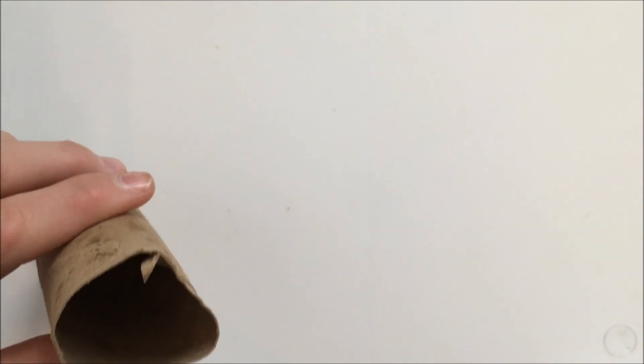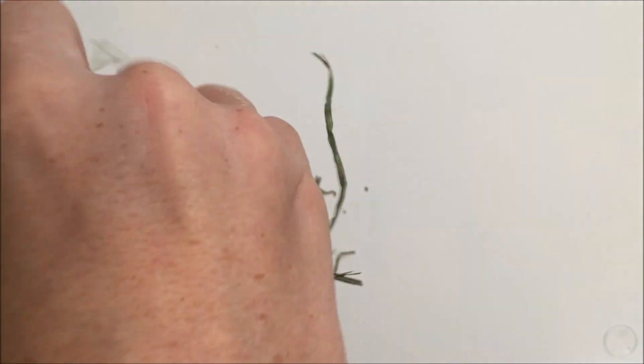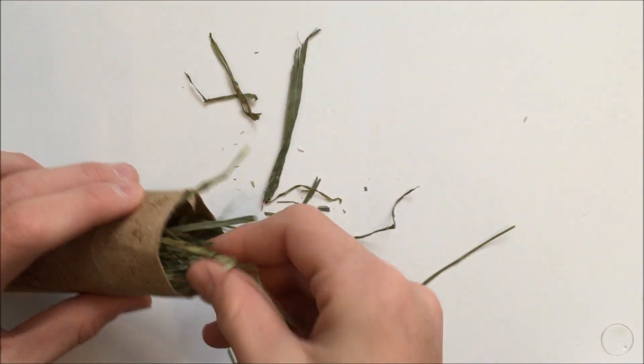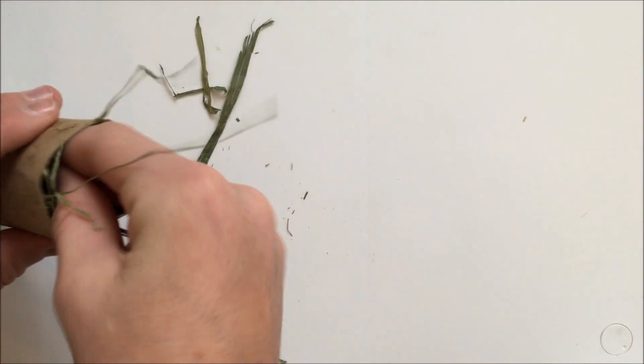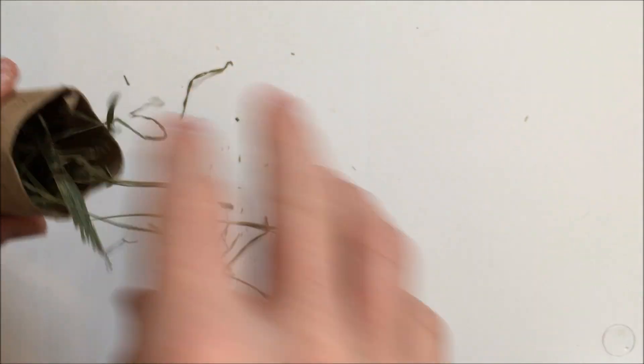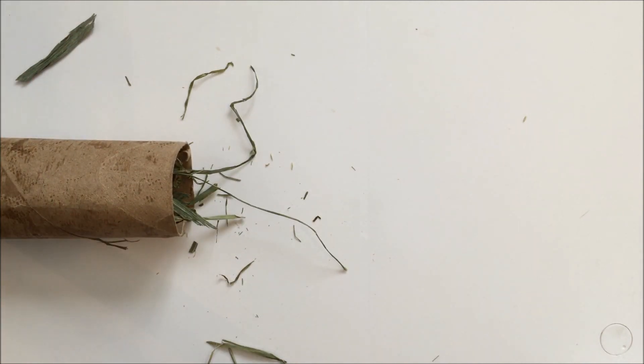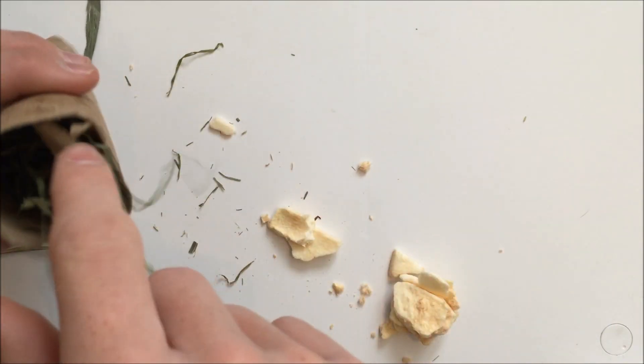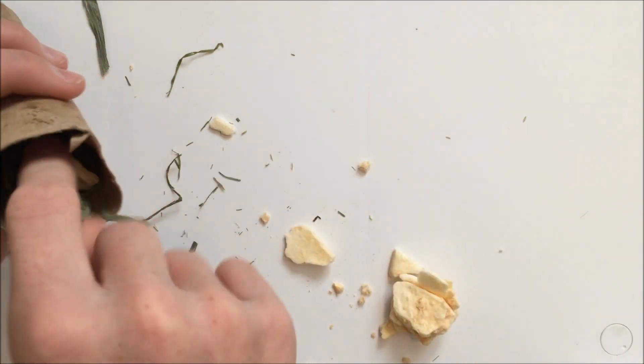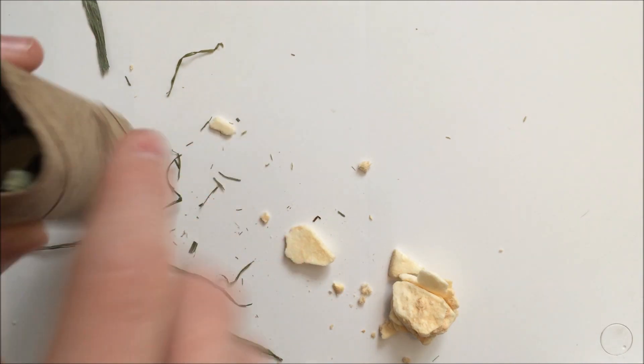Now I'm going to take some hay, I'm going to use some Timothy hay and I'm just going to shove it all into this tube. Now I'm going to take some dried apple slices and I'm just going to break some of those up and put them in there and just stick them down in there and kind of mix it up.